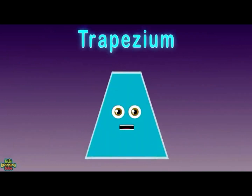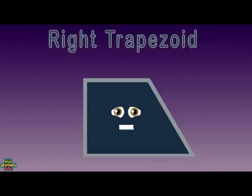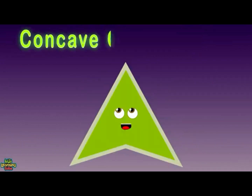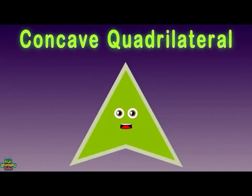A trapezium is me — a convex quadrilateral with at least one pair of parallel sides. I'm a right trapezoid. I may make your brain tangle. I'm a trapezoid with two right angles. I'm a concave quadrilateral defined as you see — a four-sided polygon with one of my angles greater than 180 degrees.